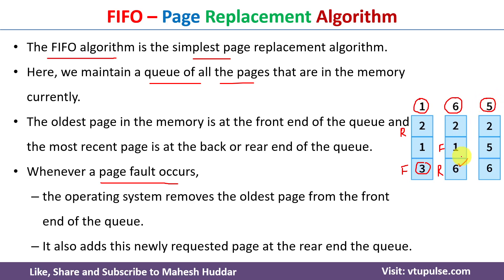The process may request another page — let's assume it requests page number 5, which is not present in primary memory. We need to replace the page at the front end of the queue, meaning we replace 1 with 5. Then we move front to the next place. This same process is repeated until all the pages are served, and finally we count the number of page faults as the output of the page replacement algorithm.